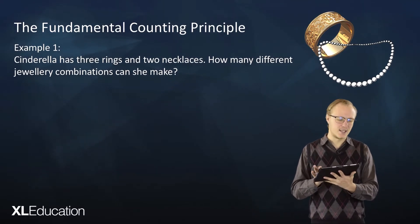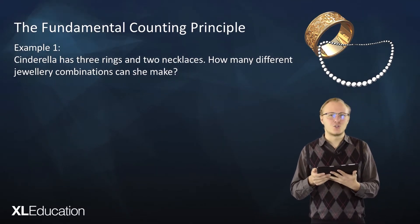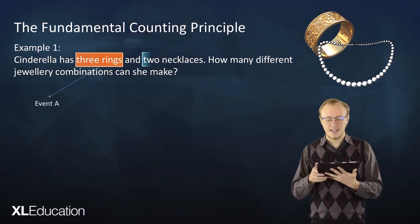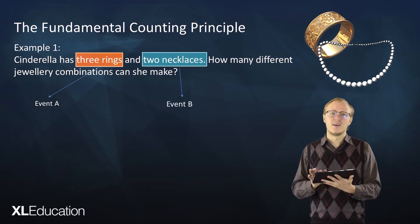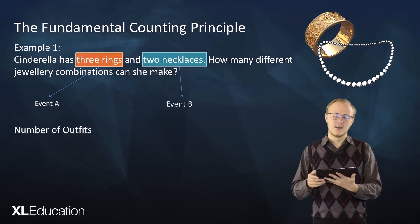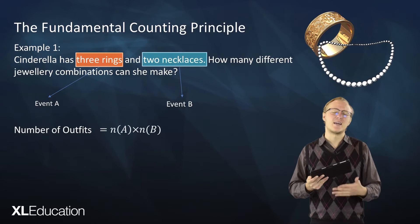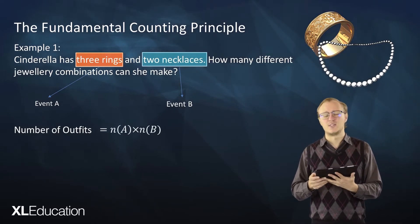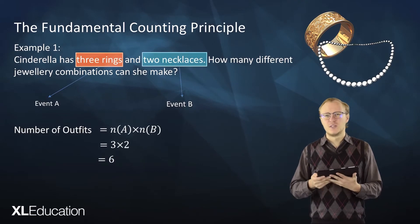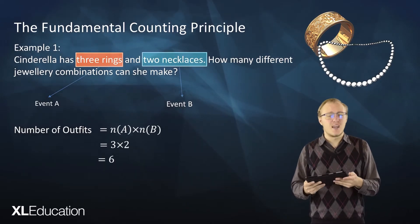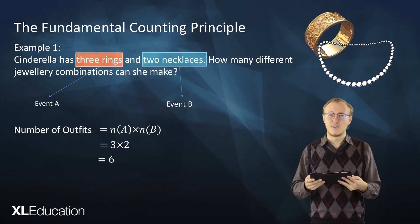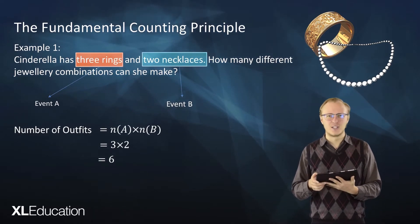Now we're going to apply the fundamental counting principle. Let's call choosing a ring event A and choosing a necklace event B. Then the number of outfits is the number of ways you can choose A multiplied by the number of ways you can choose B, and that's three times two equals six. We get the same answer, but with far less work — which is ultimately what we want.